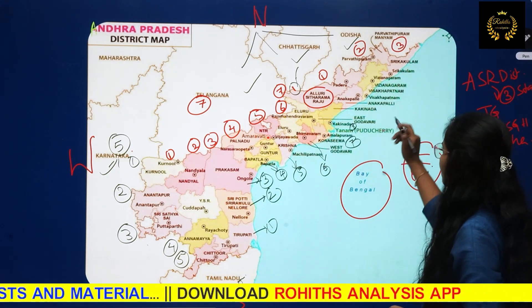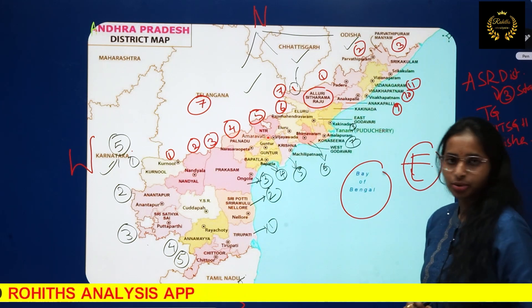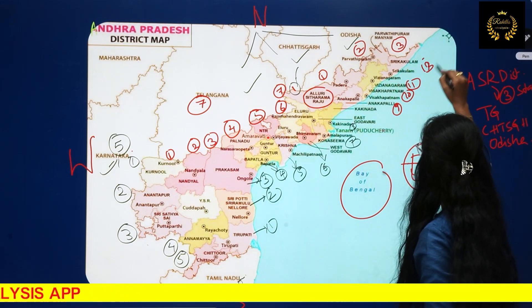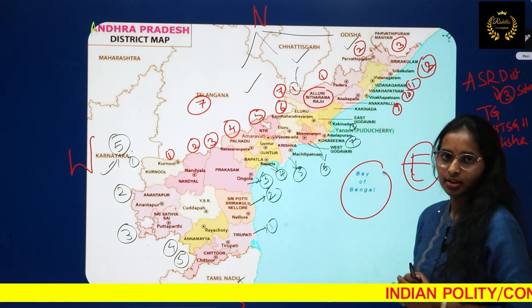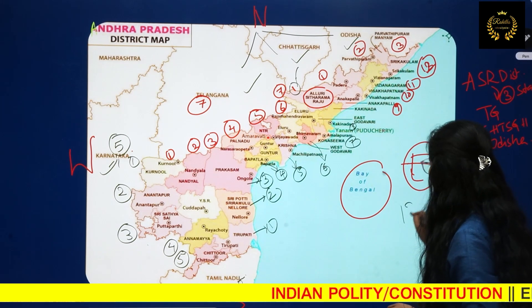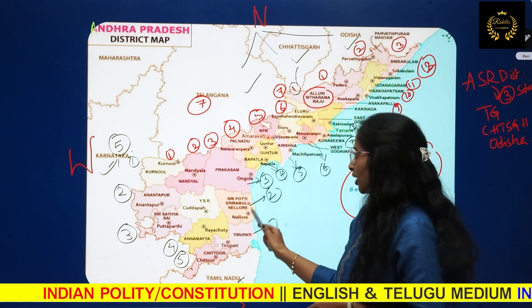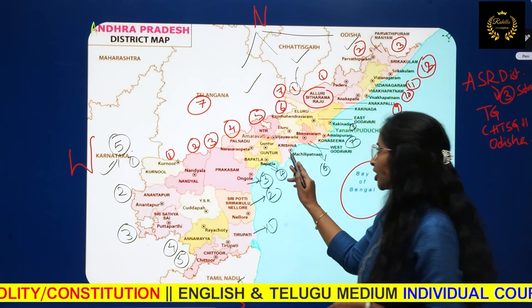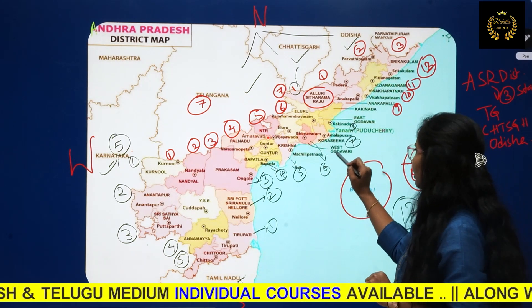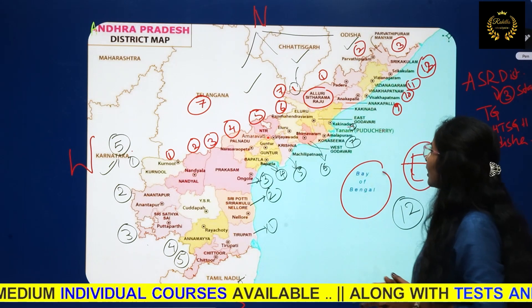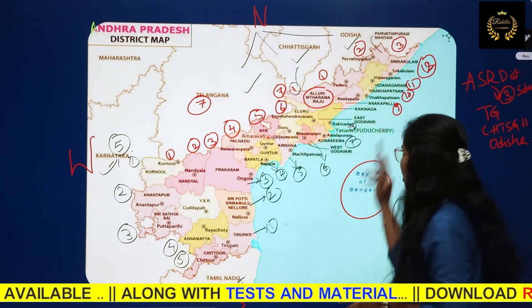Ninth is Anakapalli, tenth is Visakhapatnam, eleventh is Vijayanagaram, and twelfth is Shrikakulam. So the coastal region has 12 districts: Tirupati, Shri Potti Sriramulu Nellore, Prakasham, Bapatla, Krishna (Machilipatnam), Konasima, West Godavari, Kakinada, Anakapalli, Visakhapatnam, Vijayanagaram, and Shrikakulam. These are the 12 districts sharing the coastal line.